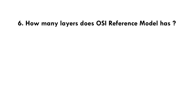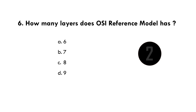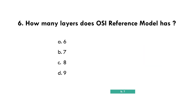How many layers does the OSI reference model have? — Option B: 7.